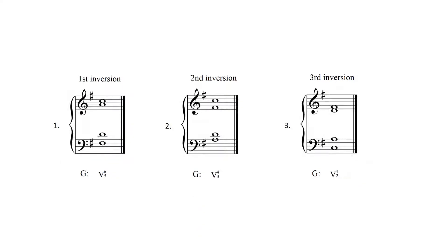In the example seen here in the key of G major, the chordal root of the dominant seventh chord is D. The chordal third is the F sharp. When the chordal third appears in the bass voice, as seen in example one, the resulting seventh chord is in first inversion. The chordal fifth appears in the bass voice in example two, and this is a second inversion dominant seventh chord. And finally, in example three, when the chordal seventh appears in the bass voice, the resulting sonority is in third inversion.